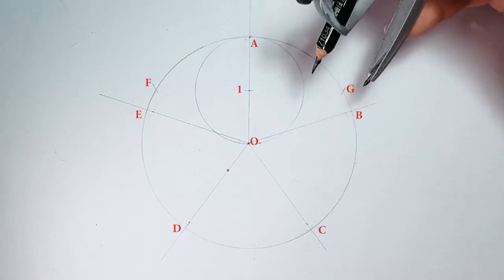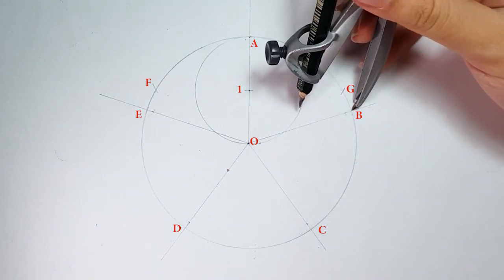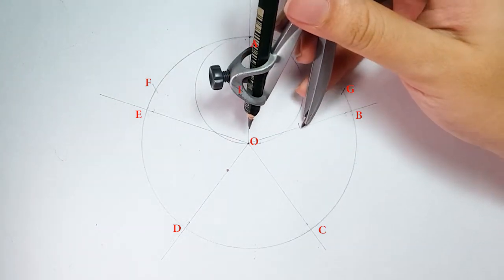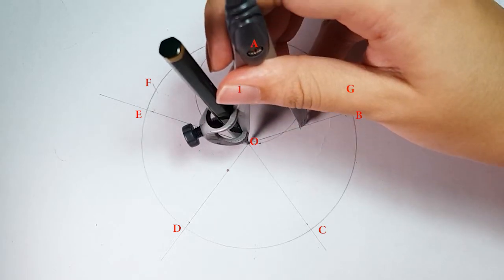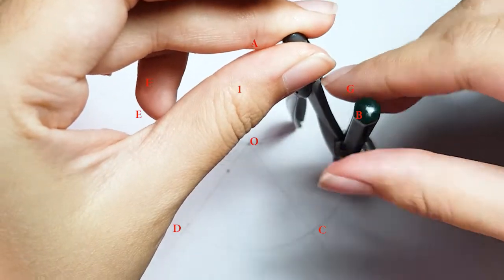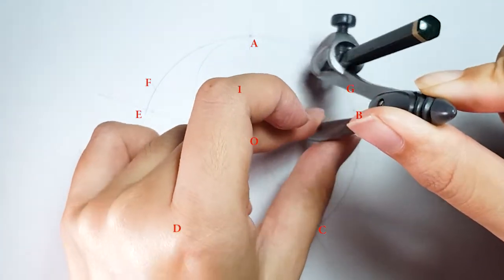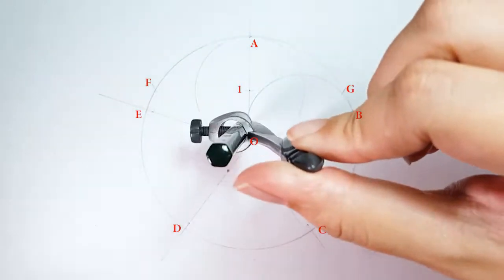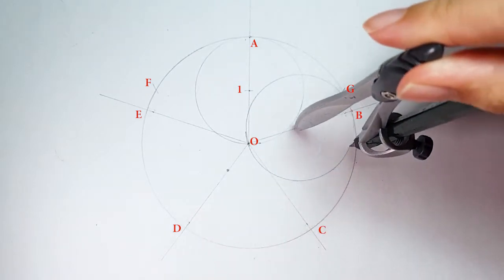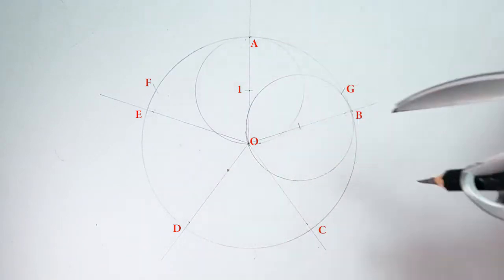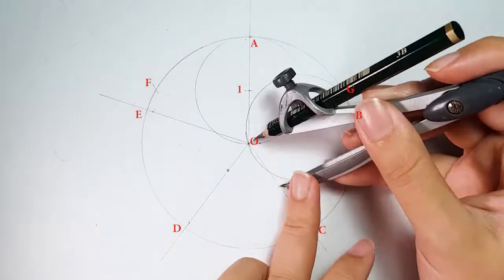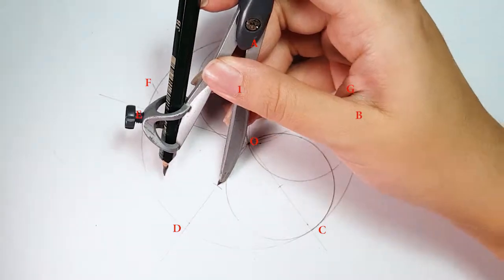With the same length, place your compass on point B and draw a mark on line OB. Then place your compass on the marked point and draw a circle. Steps are repeated on the remaining lines.